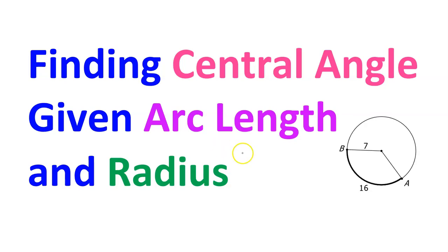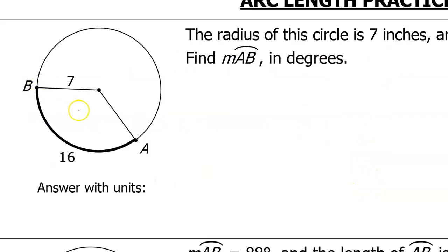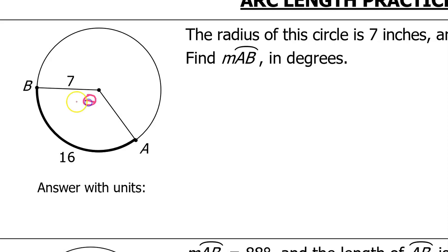In this video, I will show you how to find the central angle given the arc length and the radius. For this problem, we are told that the radius of the circle is 7 inches, and the arc length from A to B is 16 inches. We are being asked to find the arc measure of AB, but that's the same thing as the central angle, which I am going to call theta.